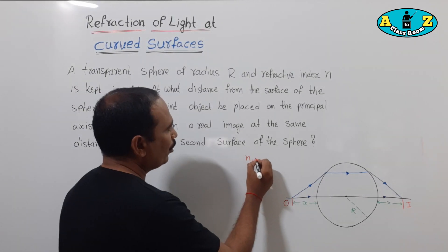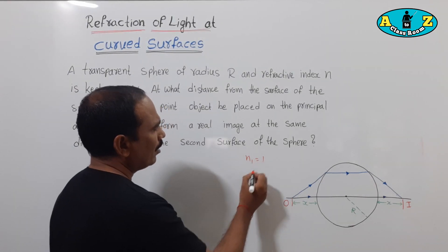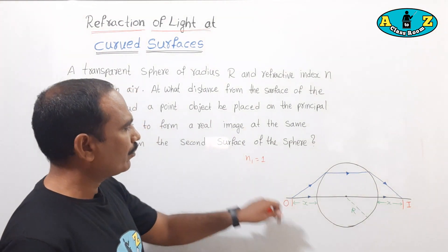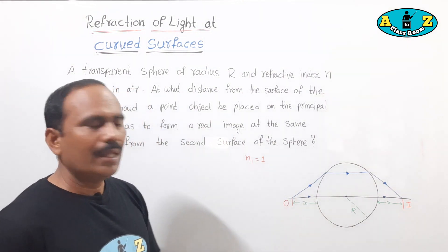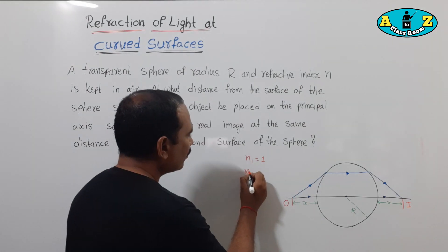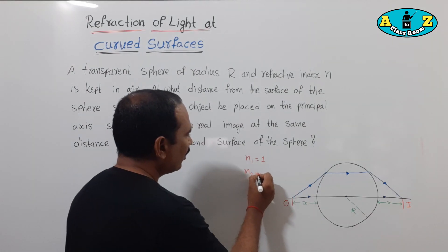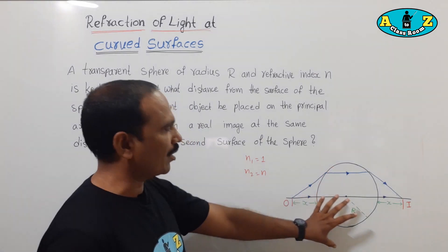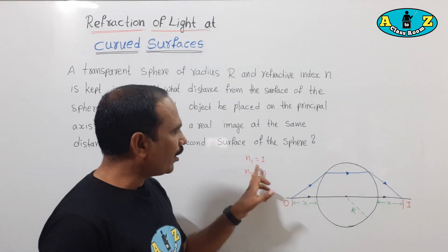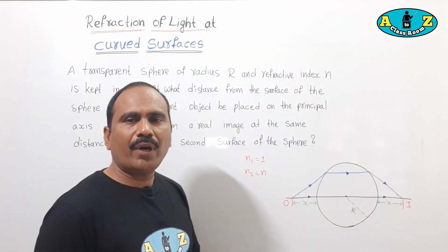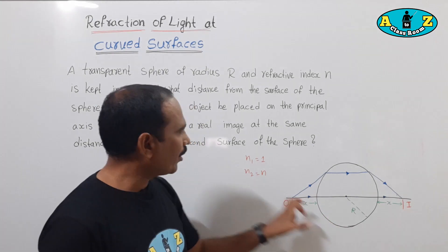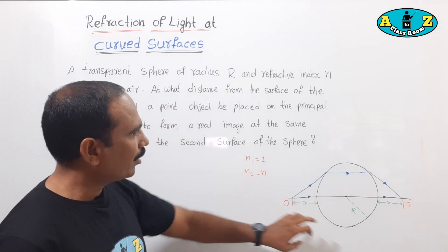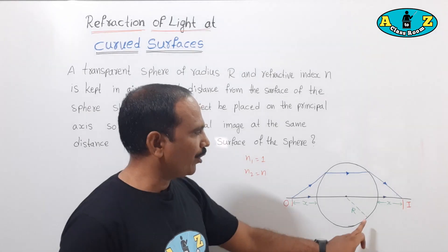n1 is equal to 1, that is the refractive index of air. n2 is equal to n, that is the refractive index of the sphere.